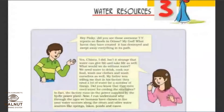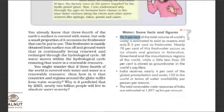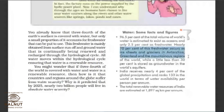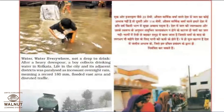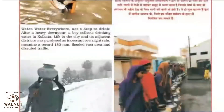About 96.5 percent of water on earth is available, but only 2.5 percent is fresh water. Out of that, 70 percent is locked in glaciers in Antarctica, Greenland, and mountainous regions, and a little less than 30 percent is stored in groundwater in the world's aquifers. As the saying goes: water, water everywhere, not a drop to drink — this boy in the image is surrounded by flood water yet cannot drink it.